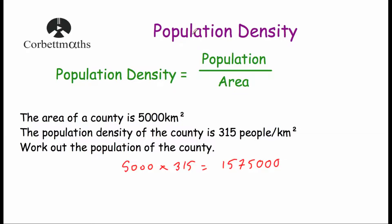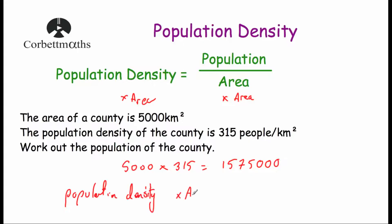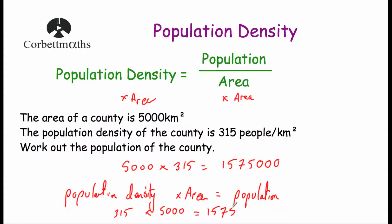Alternatively, we could make population the subject of the formula. The formula has population divided by area on the right-hand side, so we multiply both sides by area to get: population density multiplied by area equals population. So population equals population density multiplied by area — that's 315 multiplied by 5,000 — which again gives us 1,575,000.